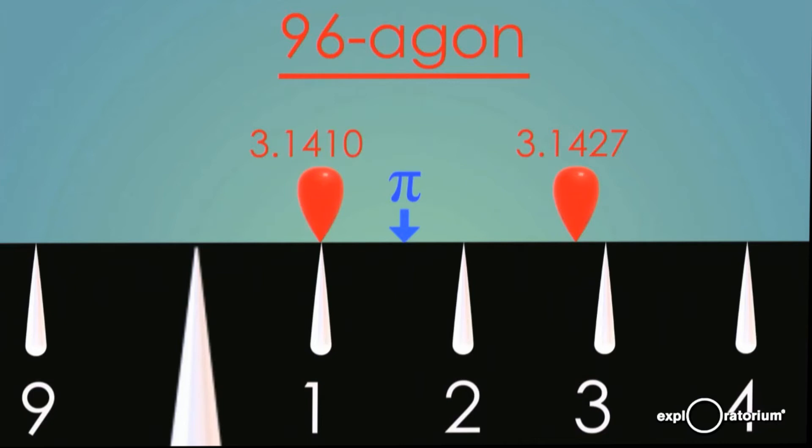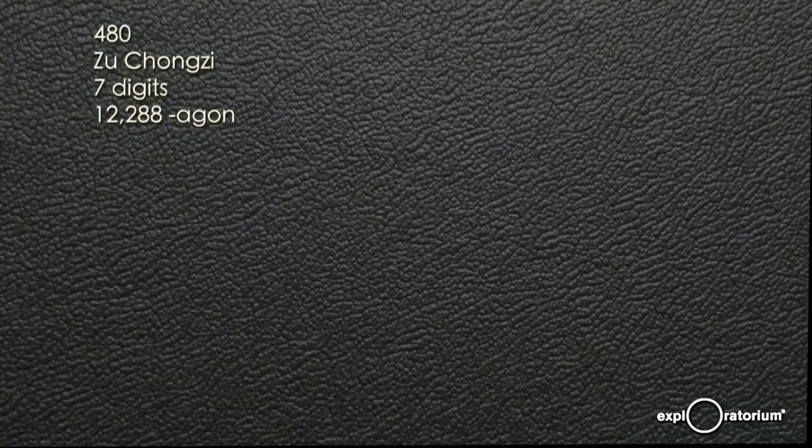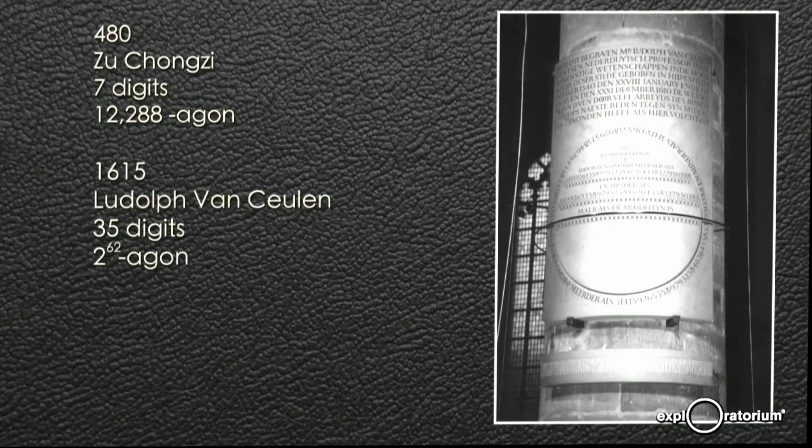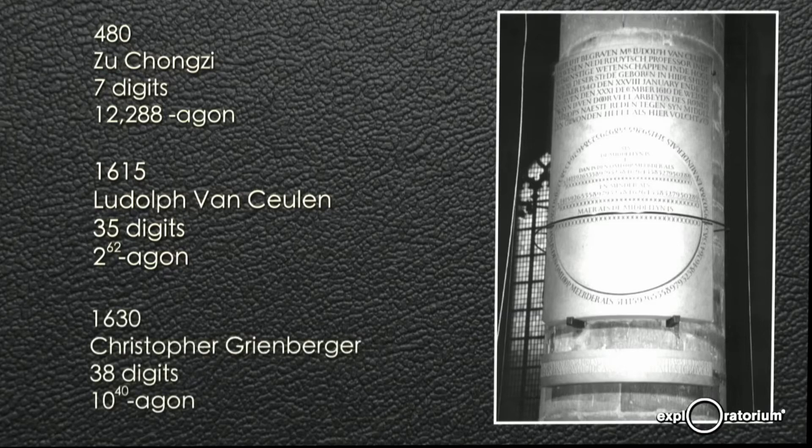So for about 2,000 years, this polygon method was really the only game in town. No one could really figure out another way of calculating the digits of pi. So when we made progress on knowing the digits of pi, it was because someone sat down and just did a marathon calculating session with absurdly many-sided polygons. So in 480, a father and son team in China figured out pi to seven digits using a 12,288-agon. Ron mentioned Ludov von Kuhlen, who got to 35 digits with a 2 to the 62-agon, which ended up on his tombstone. And for a while, pi was actually known as the Ludovine constant. He was beaten about 15 years later by Christopher Greenberger, who got to 38 digits with a 10 to the 40-agon. And I think Greenberger might have been one of the last people to calculate pi using the polygon method.